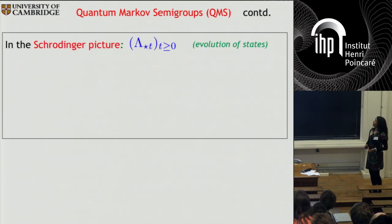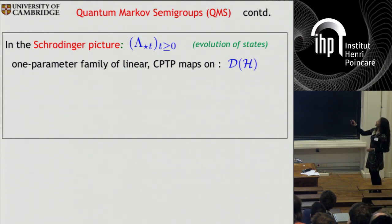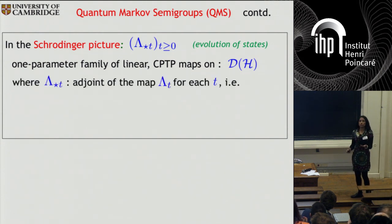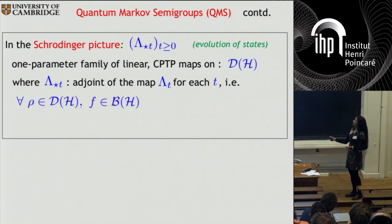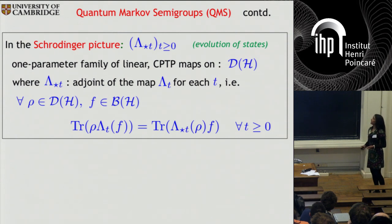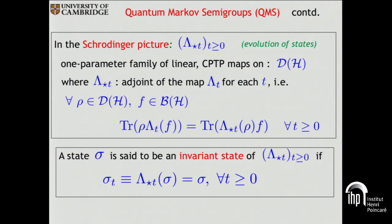You can also look at it in the Schrödinger picture, where it is given by a one-parameter family of linear completely positive trace-preserving maps on the set of density matrices on H, denoted D of H. Lambda star t is just the adjoint of the map lambda t for each t. A state sigma is said to be an invariant state if it doesn't change under the action of lambda star t for all t greater than or equal to zero, and the concept of an invariant state will be crucial in this talk.